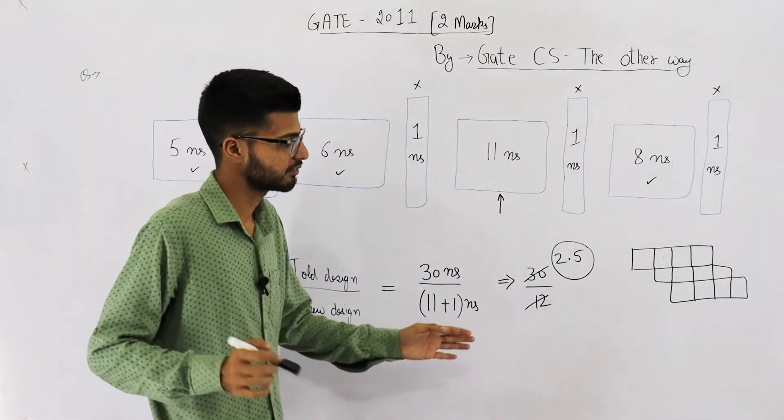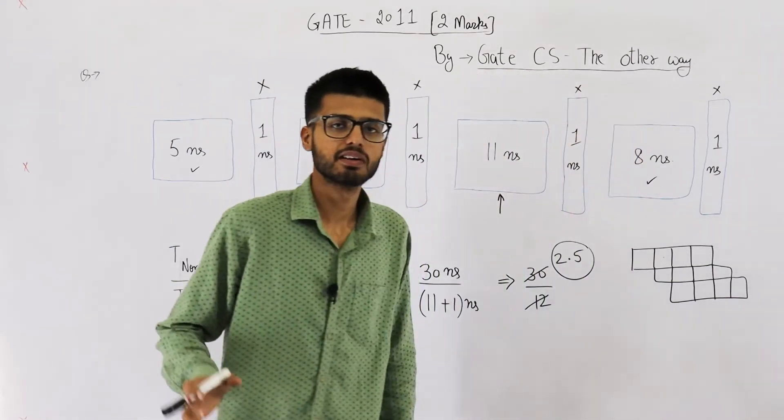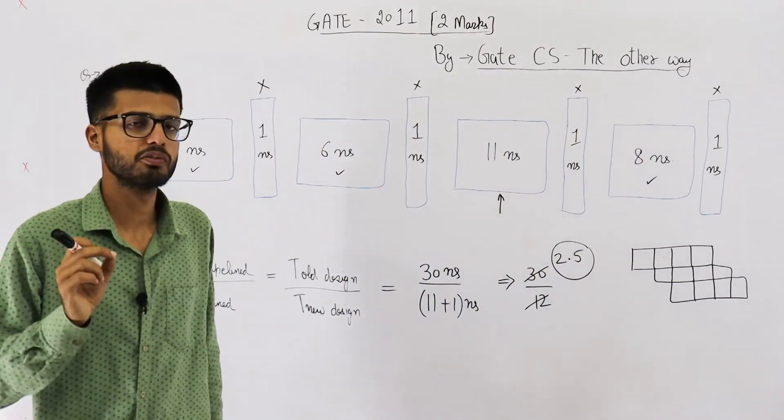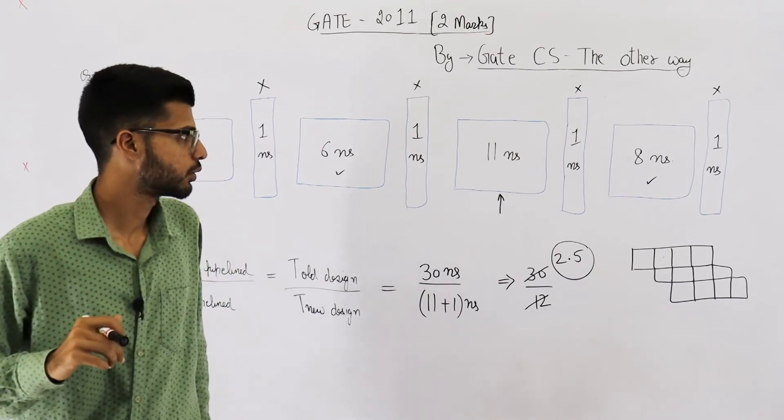You can see, when we keep on increasing this, the average CPI will touch 1. It will be 1 point something, 0, 0, 0. You can assume it to be 1.